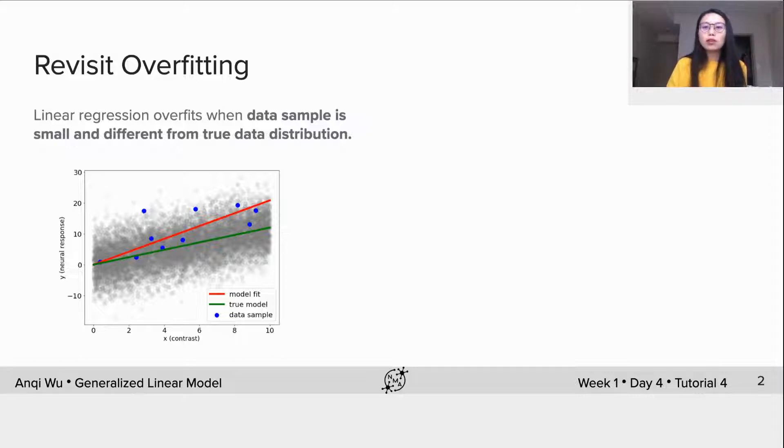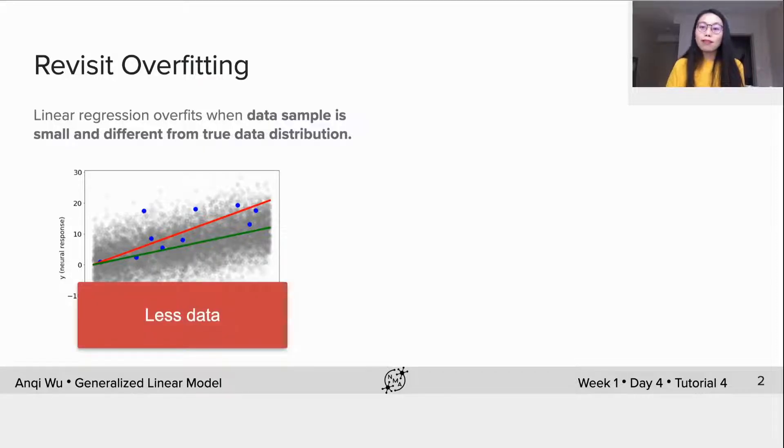The distribution of these blue dots in the figure doesn't well represent the true data distribution, which are these gray dots. Thus the model fit is quite different from the true model, and we say overfitting happens when we have less data.